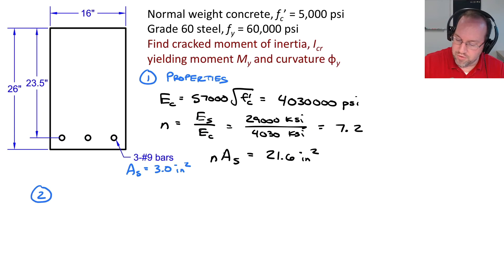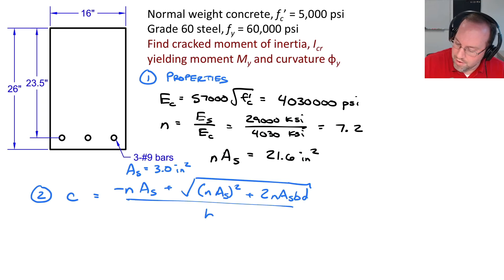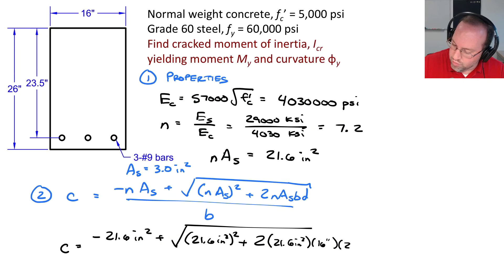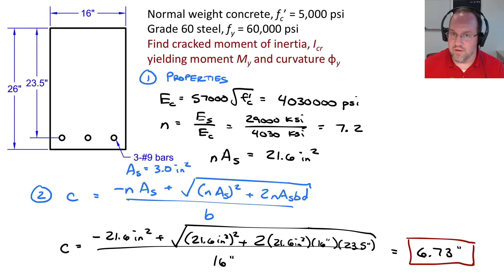Now, step 2 is to find my depth to neutral axis C, and this is given by that long quadratic equation: negative N times AS plus the square root of N AS squared plus 2 N AS B D, all divided by B. So I know all these quantities, it's just a matter of plugging in my values. So here we have C is equal to negative 21.6 inches squared for N times AS plus the square root of 21.6 square inches, that quantity squared, plus 2 times 21.6 square inches multiplied by 16 inches and 23.5 inches, and then I'm going to divide all of this by 16 inches. And that result is going to give me 6.73 inches down from my top surface. So that is the extent of my cracking, and that is equal to my neutral axis depth.